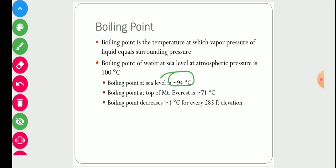On the other hand, the boiling point at the top of an average mountain is 71°C, because boiling point is directly correlated with pressure. At higher altitude, the atmospheric pressure is less, so water boils below 100°C. Boiling point decreases approximately 1°C for every 285 feet of elevation.